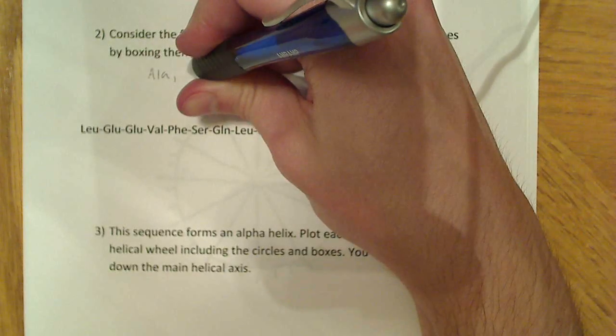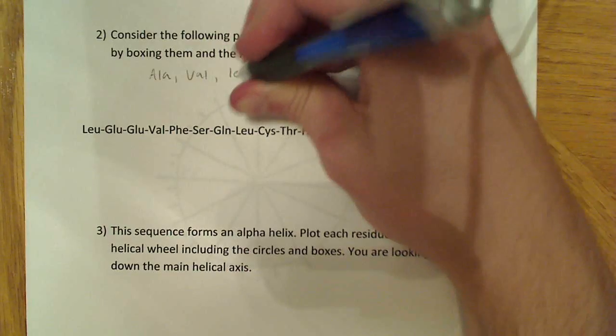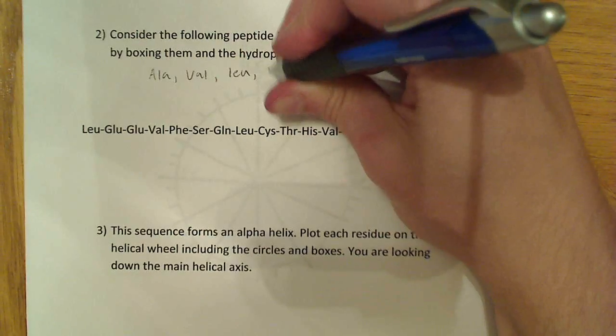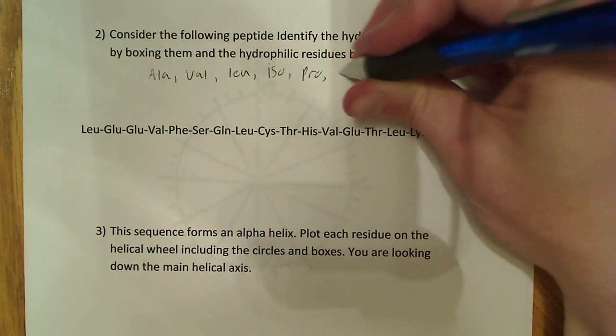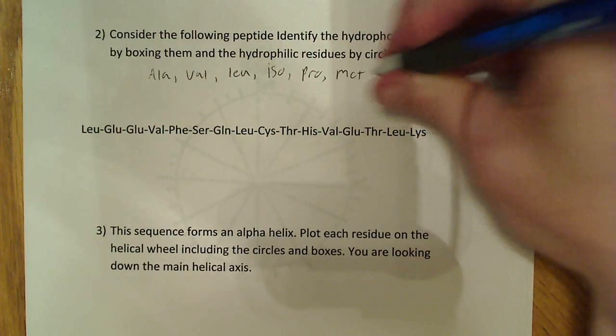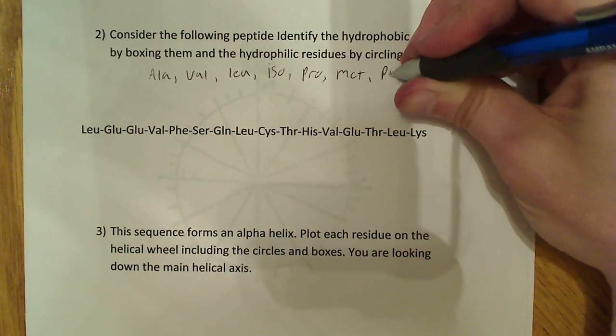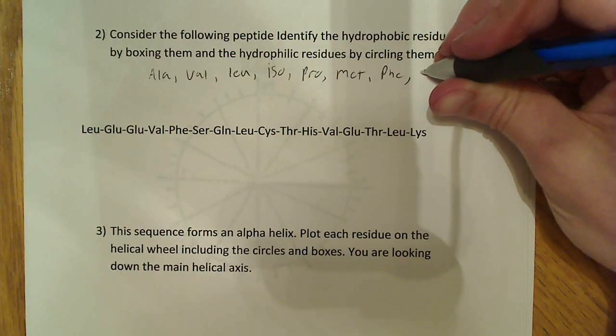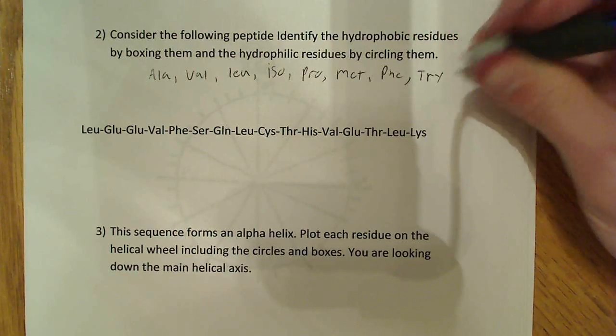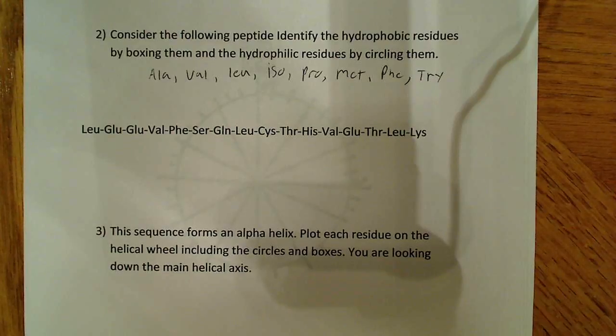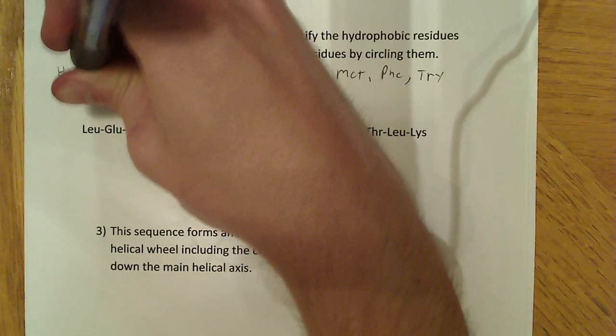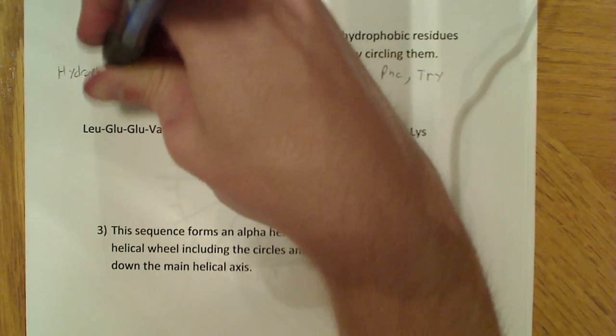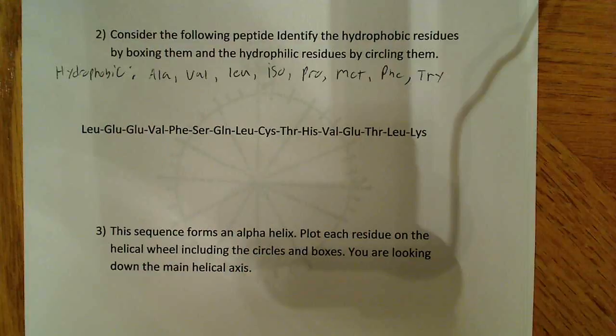So, in case you don't remember what the hydrophobic residues are, I'm just going to give them to you right here. They're alanine, ALA, valine, leucine, isoleucine, proline, methionine, phenylalanine, and tryptophan. And, so those are the hydrophobic amino acids.